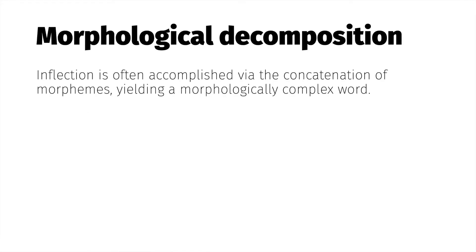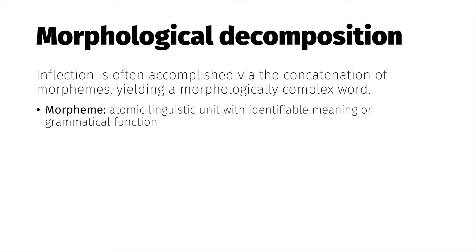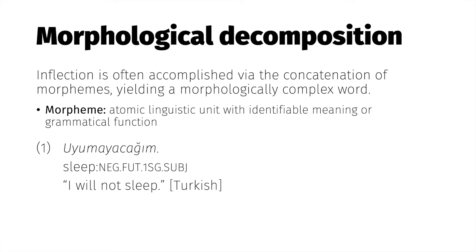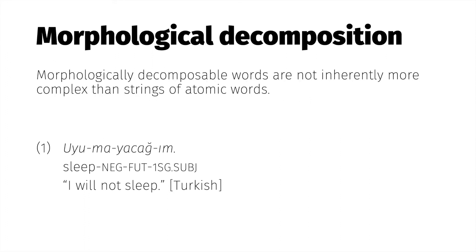Languages often inflect words by concatenating a string of morphemes — a morpheme being an atomic, meaningful, grammatical unit. Here's a fully inflected word from Turkish. It's decomposable into four morphemes: a verb root and three inflectional suffixes. Stringing together morphemes to create a word is not an inherently more complex process than stringing together words to make a phrase.